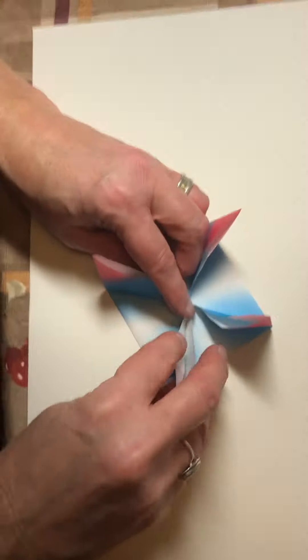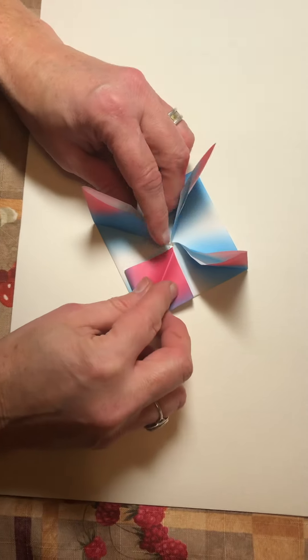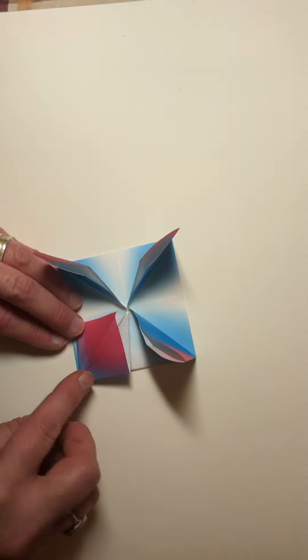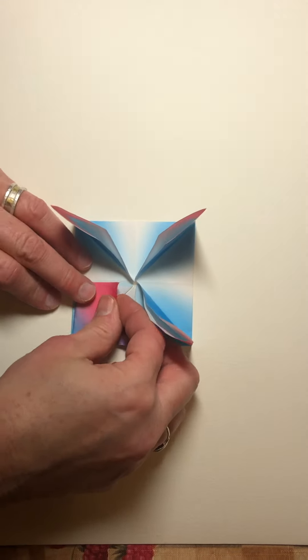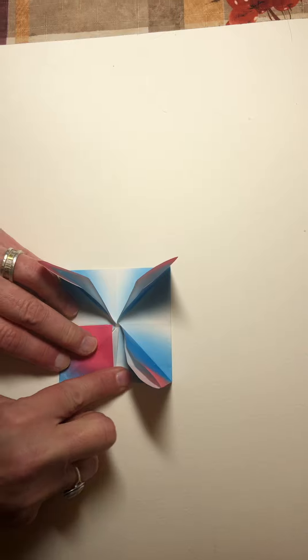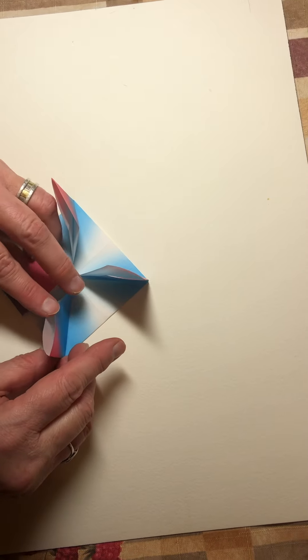But then at this point we open these like a bird beak. Bawk, bawk, bawk. And we squash them all nice and flat. Right there I've got a little kink so I'm gonna try to smooth it out. If I have to sometimes I put a pencil on there. So we would do that to all four.